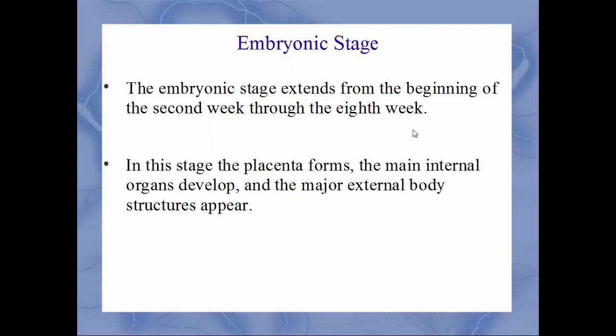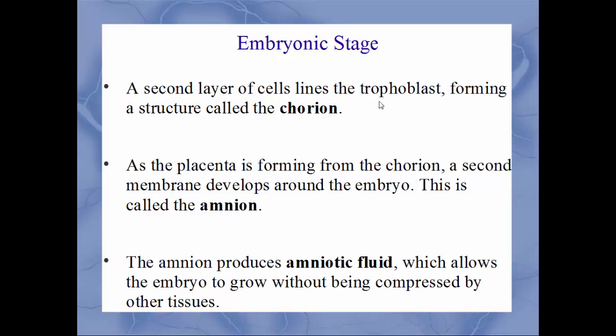Next we'll move on to the embryonic stage. This period begins from the end of the second week through the end of the eighth week. At the end of the stage, the placenta will form, the internal organs will develop, and the major external body structures will appear. Also within this stage, a second layer of cells that lines the trophoblast will form — this is called the chorion. As the placenta is forming from the chorion, another membrane develops directly around the embryo called the amnion. It's this amnion that gets filled with amniotic fluid, which will allow the embryo to grow and move around without being compressed by other tissues.